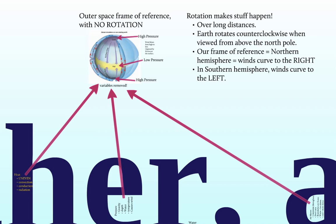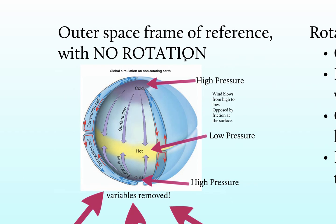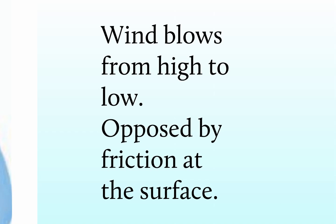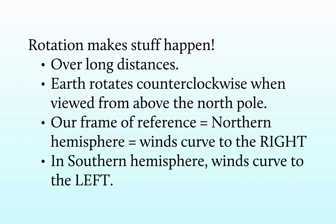One of the things we left off with when first talking about air pressure was this oversimplification: we'd have high pressure at the equator, low pressure at the poles, and winds that generally blow towards the equator because wind always blows from high to low. But that's an oversimplification — we have friction at the surface from trees, buildings, and mountains. Also, rotation makes stuff happen — and by rotation, I mean the rotation of the Earth.